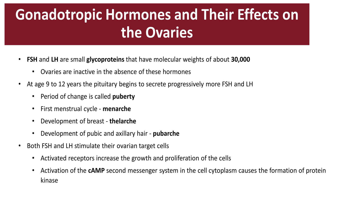The ovarian changes that occur during the sexual cycle depend very heavily on the gonadotropic hormones FSH and LH, which are secreted by the anterior pituitary. Both of these hormones are small proteins with a weight of about 30,000 daltons. When these hormones are absent, the ovaries remain basically inactive. At ages 9 to 12, the pituitary begins to secrete more FSH and LH, eventually leading to the start of female cycles — puberty — usually between ages 11 to 15. The first menstrual cycle is called menarche, breast tissue development is called thelarche, and development of pubic and axillary hair is called pubarche. Almost all FSH and LH receptors are stimulatory and activate the cyclic AMP second messenger system, causing protein kinase activation and phosphorylation of enzymes that stimulate sex hormones.